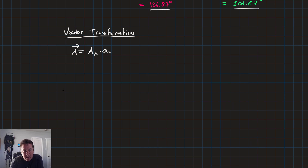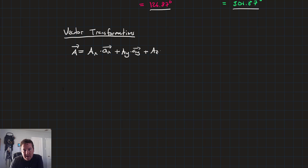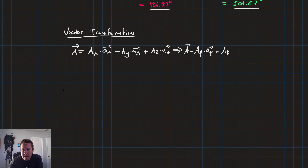A = Ax·â_x + Ay·â_y + Az·â_z, and we want to convert that to A = A_rho·â_rho + A_theta·â_theta + Az·â_z.